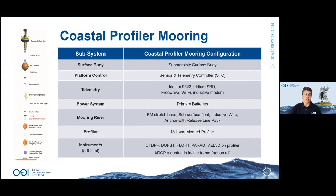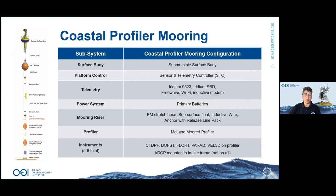The coastal profiling mooring has a submersible surface buoy — able to be pulled under if conditions get rough — containing the main STC controller. Telemetry components on the tower enable Iridium and line-of-sight communications via FreeWave or Wi-Fi, with inductive communications down the mooring line. It's powered entirely by primary batteries. A stretch hose component decouples wave motion from the subsurface sphere keeping the mooring taut, with an inductive wire rope for the profiler to crawl up and down, and an upward-looking ADCP. Anchors are fully recoverable.